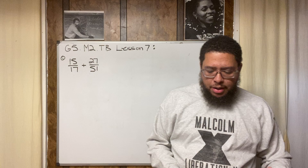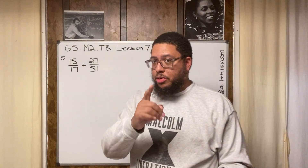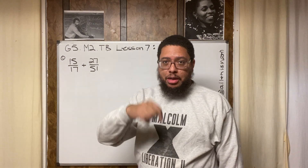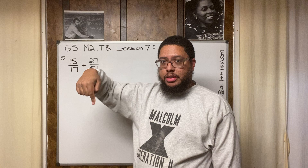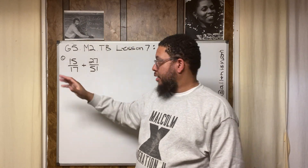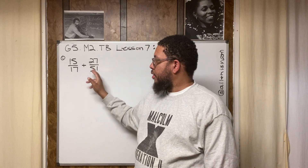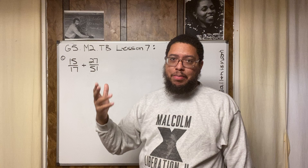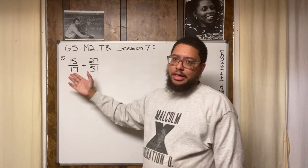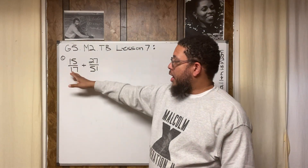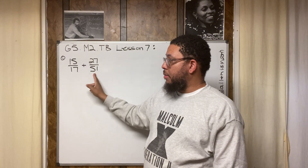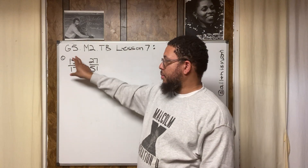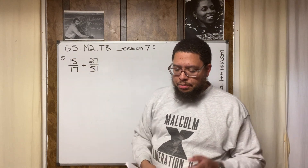Now, what are related units? Related units — we talked about this in the Lesson 5 video. Denominators are the bottom numbers; numerators are the top numbers. Related units are when one of the denominators is a factor of the other. For example, 17 is a factor of 51 — because 17 times 3 is 51, and 51 divided by 3 is 17. So 51 is a multiple of 17. They are related units.